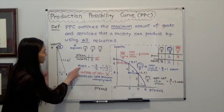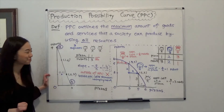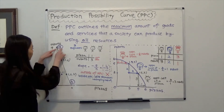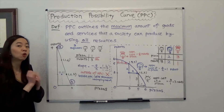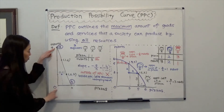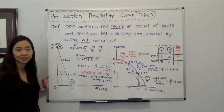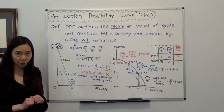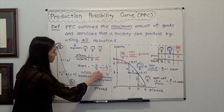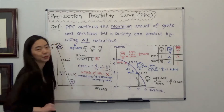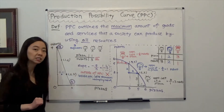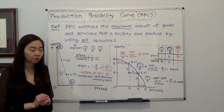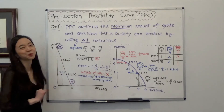We can calculate the slope of the Production Possibility Curve. The slope is rise over run. From point A to point B, the rise is from 9 to 0, so the rise is negative 9. The run is from 0 to 3, so the run is 3. Therefore the slope equals negative 9 divided by 3, which is negative 3. The slope of this Production Possibility Curve has a meaning — it is the opportunity cost of one pizza in terms of robots.